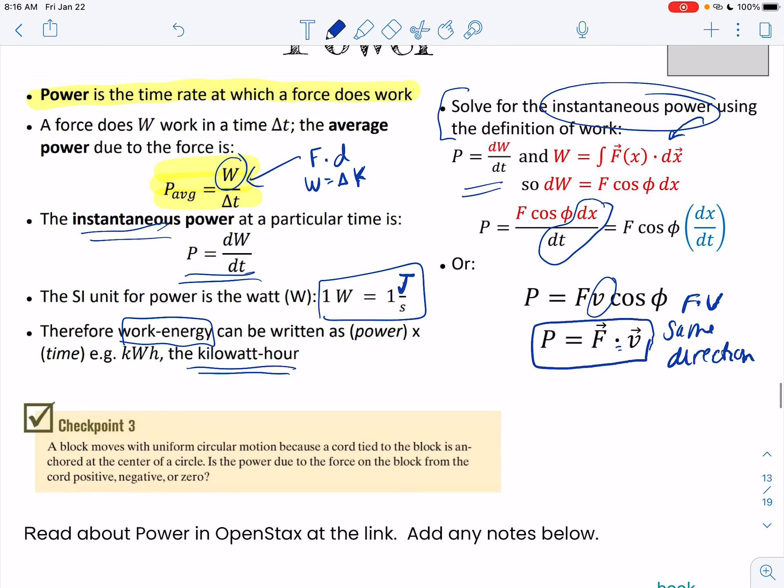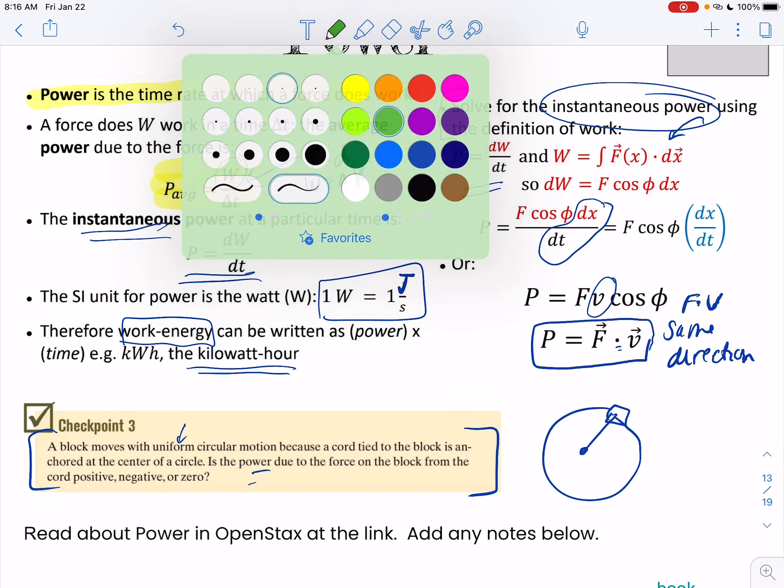And then quick checkpoint. This is the kind of stuff they like to ask sometimes. A block moves with uniform circular motion. So same speed, because a cord tied to the block is anchored at the center of a circle. So it's basically just something moving in a circle. What's the power? Positive, negative, or zero? So just like we did before,